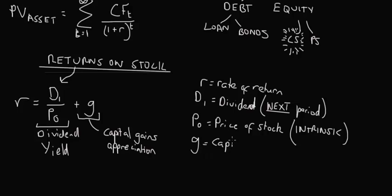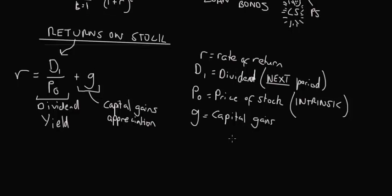And then finally, this G over here represents the capital gains appreciation. And capital gains is really the gains that you talk about when you say, oh, I bought a stock for $5 and then it went up to $10. So the way you would calculate the capital gains on that is very simply by calculating the percentage change. So if you bought a stock for $5, and then it went up to $10, you would do 10 minus 5 divided by 5, 100% return.